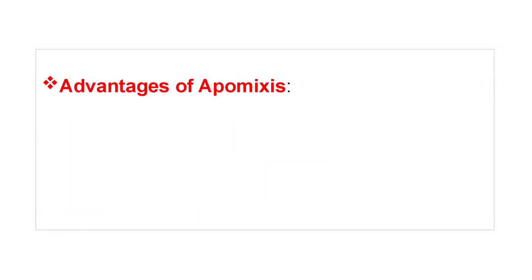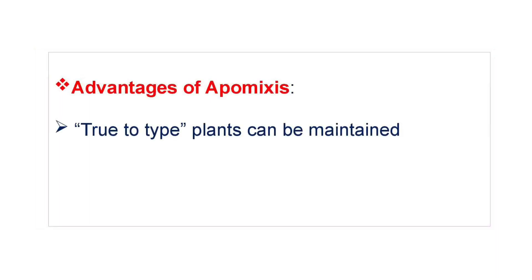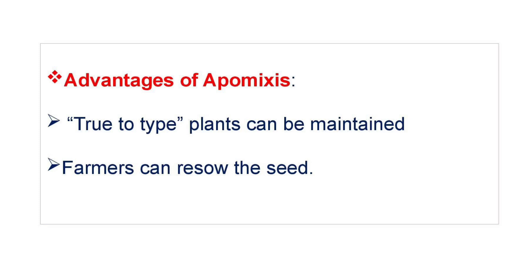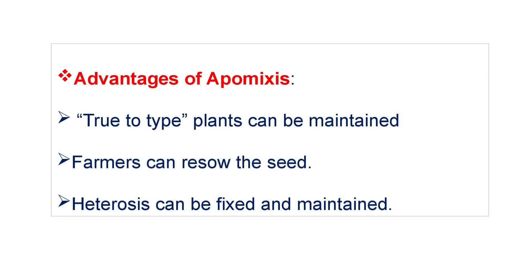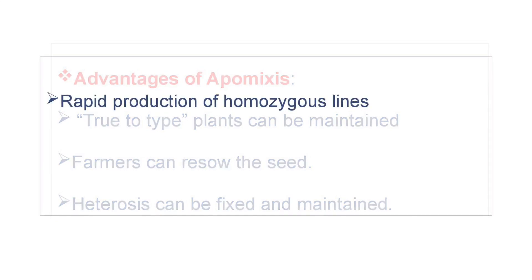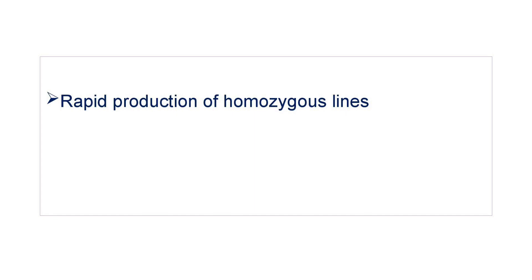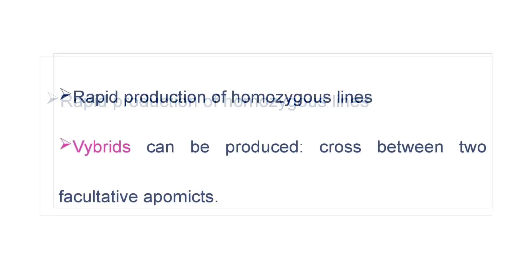Now let's learn the advantages of Apomixis. True-to-type progeny of plants can be obtained in apomictic species. Farmers can sow the same seed every year if the species is apomictic. Heterosis can be easily fixed and maintained in apomictic species. Rapid production of homozygous lines is possible. Vibrids can also be produced — a vibrid is the progeny of a cross between two facultative apomictics.